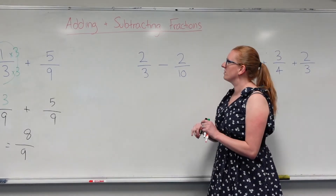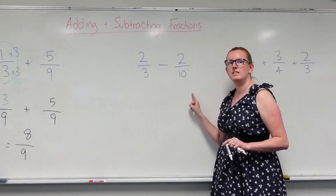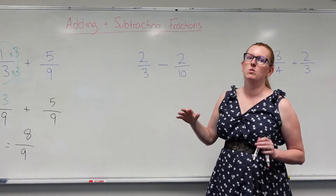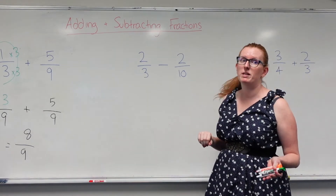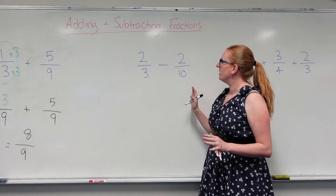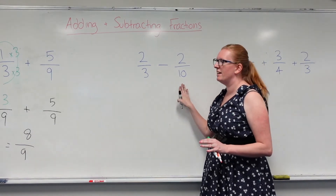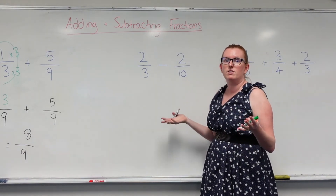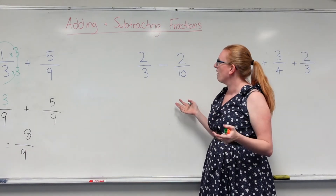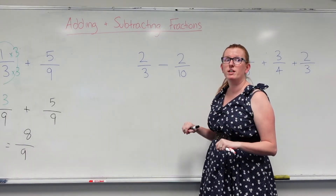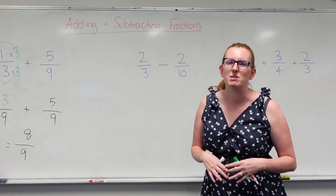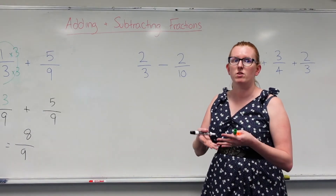Let's move over here. So I've got 2 over 3 take away 2 over 10. Can I do this at the moment? No, because they've got different denominators. So I need to find a number that 3 and 10 fit inside nicely. The best number I can think of is 30. When in doubt, just multiply the numbers together and you know you're going to get a number that they'll both go into.